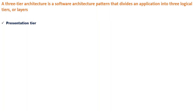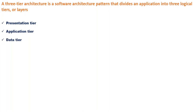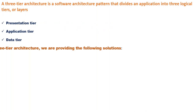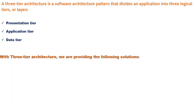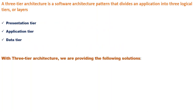In the first layer, we call it the presentation tier. The second one, we call it the application tier. And lastly, we have a data tier. So these are the logical groupings of this application.